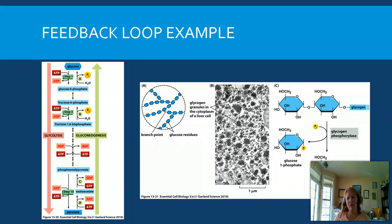Gluconeogenesis works in pretty much the reverse order, except for those bypass steps, to create glucose from energy or from pyruvate, depending on what the cell needs in the situation it's faced with.